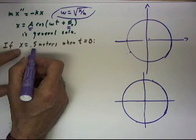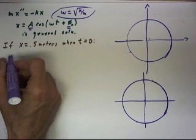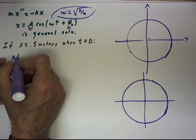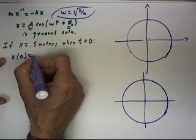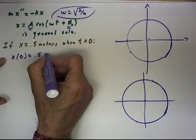Now, if x is point five meters when t equals zero, that means, of course, we write that as x of zero equals point five. And I'll go ahead and keep the meter here.